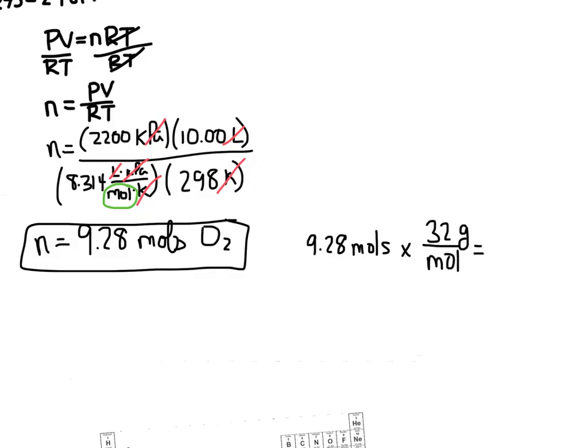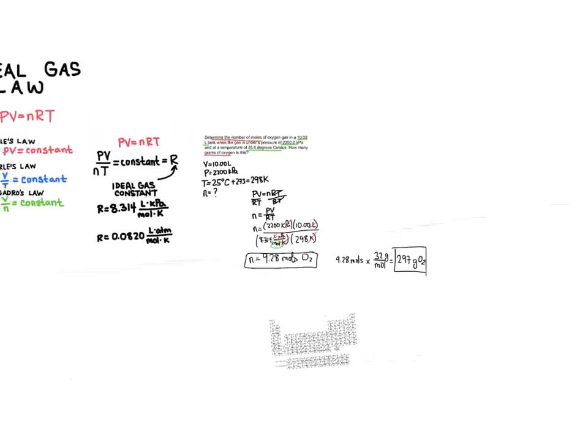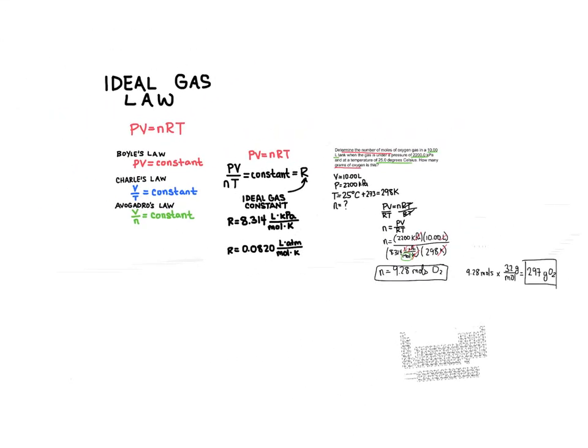And so we're just taking 9.28 and multiplying that by 32, and we end up with 297 grams of O2. And so there's the second part to our answer. And so that's the ideal gas law and the equation and how to use it.